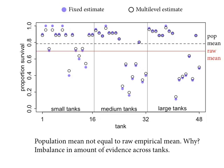Probability theory is always about states of information, and sometimes those states of information make really good predictions about things that arise from sampling. Linear regression — the geocentric model of statistics — is unreasonably successful given how bad its assumptions are. Why? Because it's just an epistemological claim: if all I care about is a measurement's mean and variance, here's a model to track the change in mean as a function of predictors. It does that job really well. This isn't to say we shouldn't strive to do better — there's no single right model.